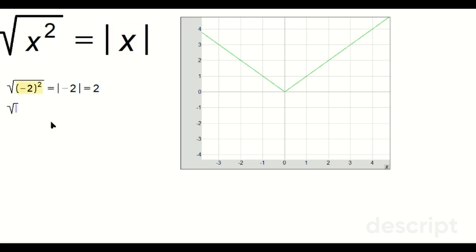The common mistake is to assume the following: the square root of negative 2 squared equals negative 2 right here. That's negative 2. Negative 2. This here is false. That's not true.